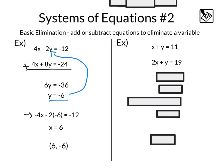In addition to adding, we can also subtract. Here we have x plus y equals 11, 2x plus y equals 19. Since these are the same, let's go ahead and subtract these.